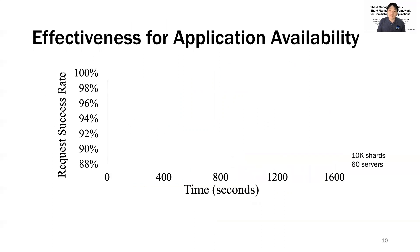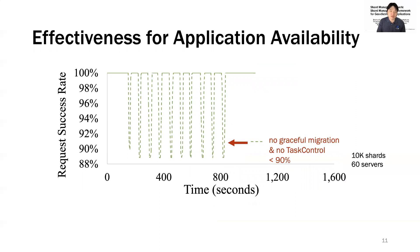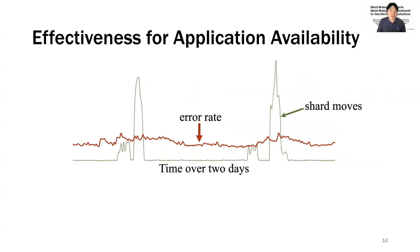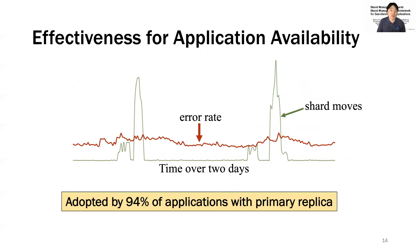Now we will describe an experiment that demonstrates the effectiveness of these two mechanisms. Here we restart application servers, 10% of them at a time, and observe the request success rate. With none of these mechanisms applied, the success rate is below 90%. If we enable task control only, it increases to 90-98%. Finally, with both mechanisms enabled, the success rate reaches 100%. We also confirmed this behavior with a production example. These charts demonstrate that the error rate for Facebook Messenger backend services remains stable during daily software updates, leveraging both mechanisms. Currently, 94% of applications with a primary replica role use these features for high availability.